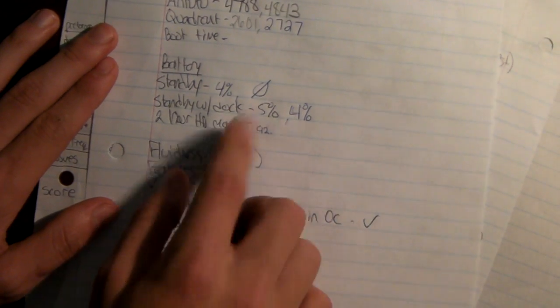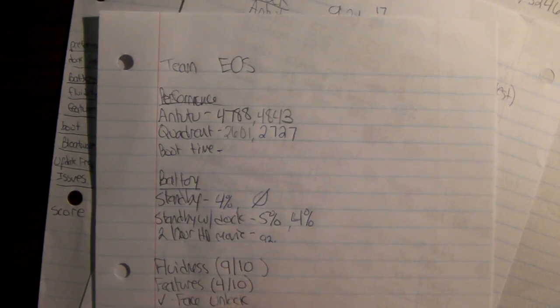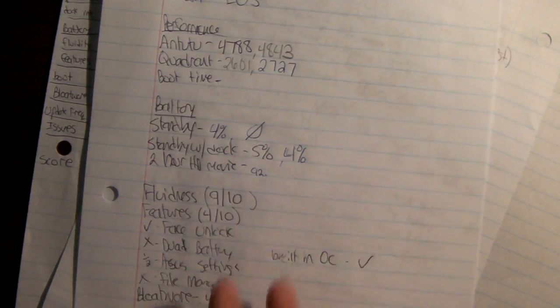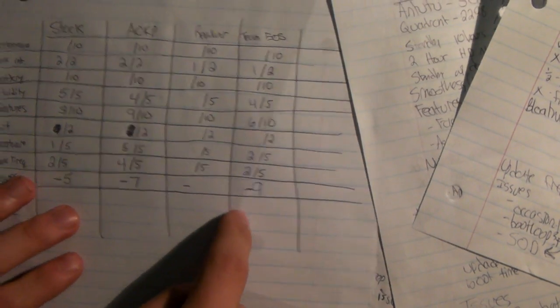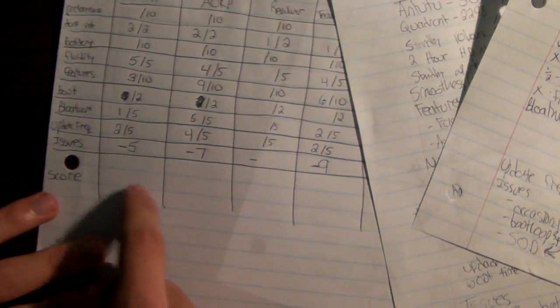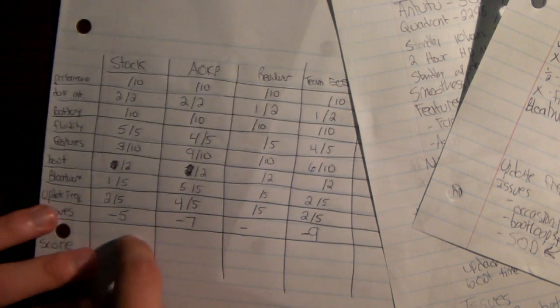So, if you're going to get this, you're definitely going to want to install a custom kernel, but because I'm comparing this stock, I'm not going to do that. As you can see here, it does have minus 9 for issues with it.